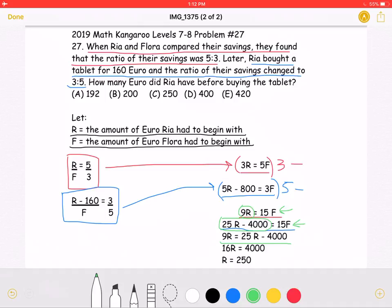Now, I can simplify this equation by subtracting 25R from both sides, which would get negative 16R equals negative 4000, and then divide by negative 1, so that 16R equals 4000. Dividing by 16 from both sides, we will get that R equals 250.